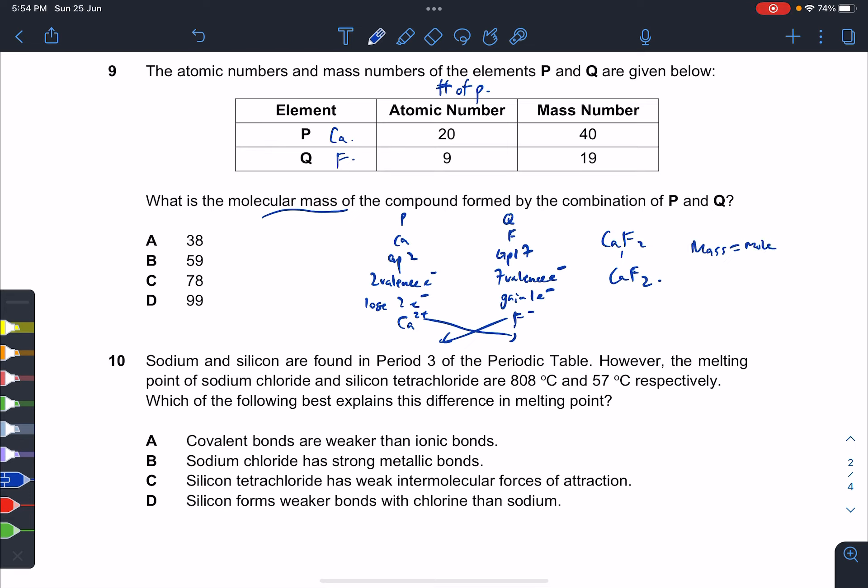What's the mass of CaF2? Mass equals mole times Mr, which is one mole times the Mr of CaF2, which is 40 plus 2 times 19, equals 58. So mass is mole times Mr. One mole of P, which is Ca (40), plus Q2, which is 2 times 19, equals 38. 40 plus 38 equals 78 grams. Answer is C.